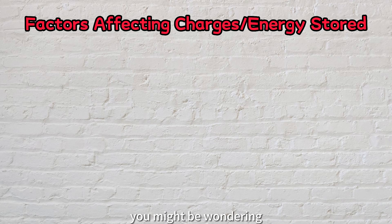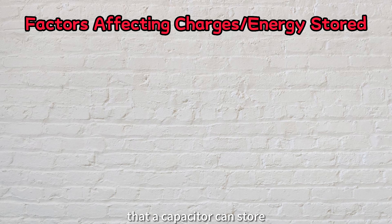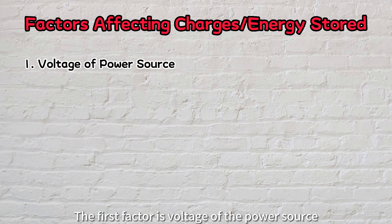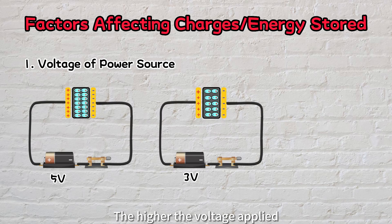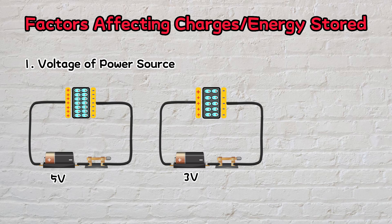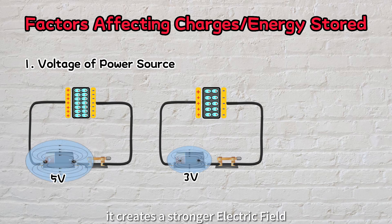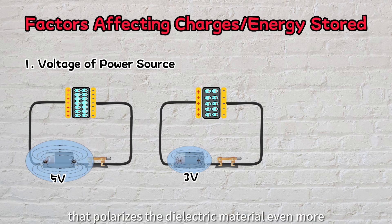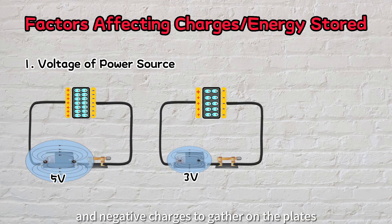You might be wondering what factors affect the maximum amount of charge or energy that a capacitor can store. The first factor is the voltage of the power source. The higher the voltage applied, the higher the number of charges that can be stored in the same capacitor. This happens because when a higher voltage is applied, it creates a stronger electric field that polarizes the dielectric material even more. As a result, there's a stronger electrostatic force, causing more positive and negative charges to gather on the plates.